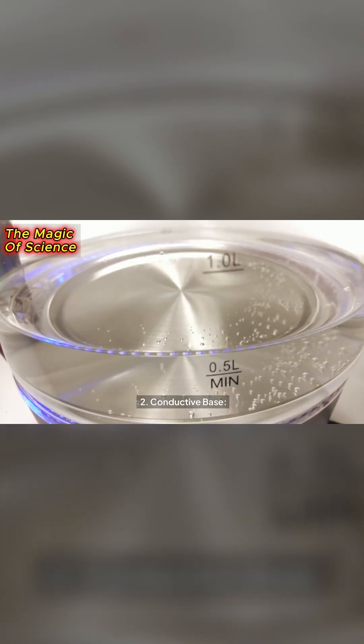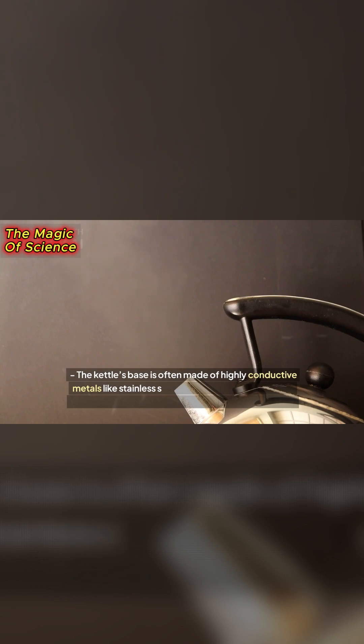2. Conductive base. The kettle's base is often made of highly conductive metals like stainless steel or aluminum, which quickly transfers heat from the heating element to the water.